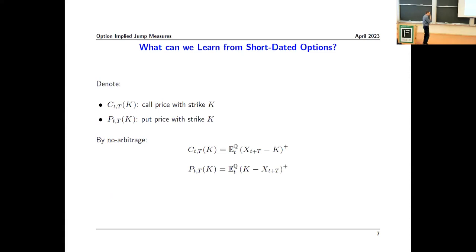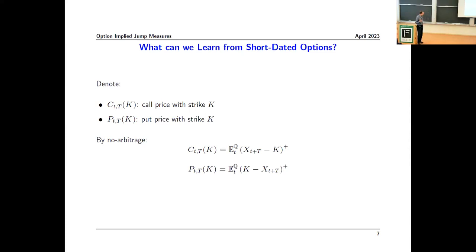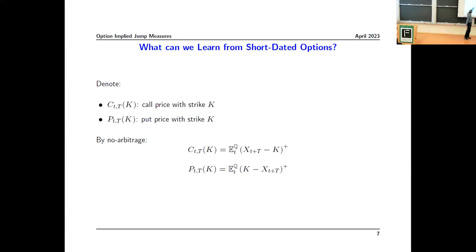Now let's introduce the option data notation. C stands for call, P for put. The value of a call is the conditional expectation of the payoff max(S_T minus K, 0), and similarly for a put. I've omitted discounting because we're looking at short-dated options and it makes essentially no difference — it just simplifies notation by not carrying around risk-free interest rates and dividend yields.